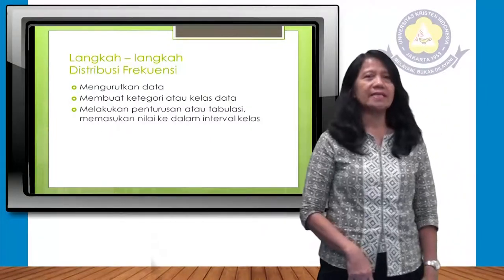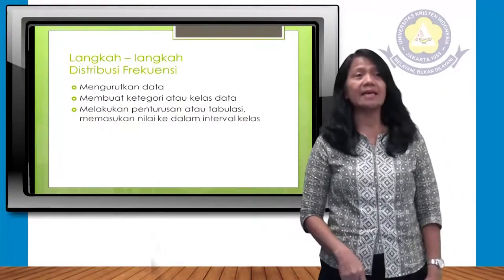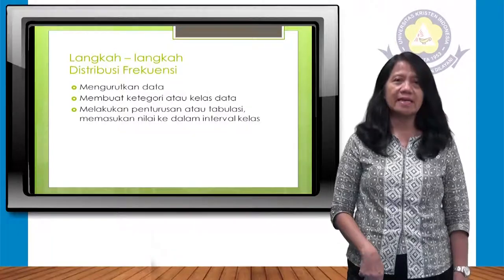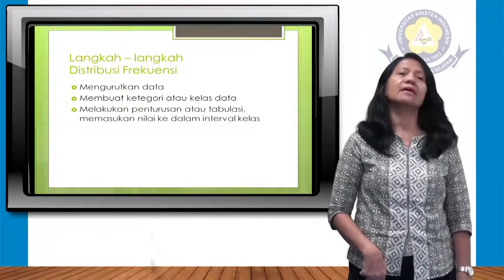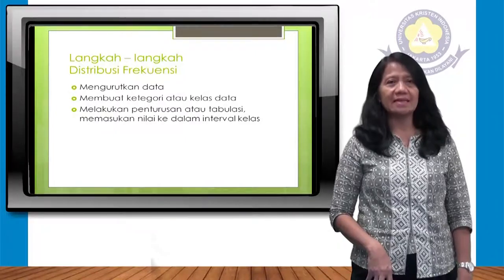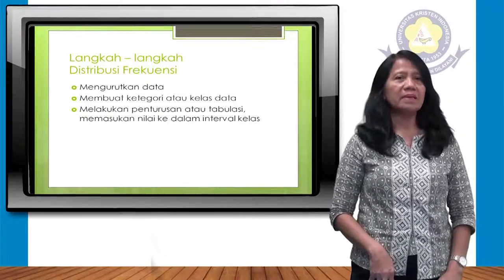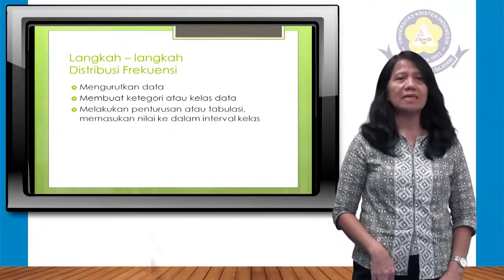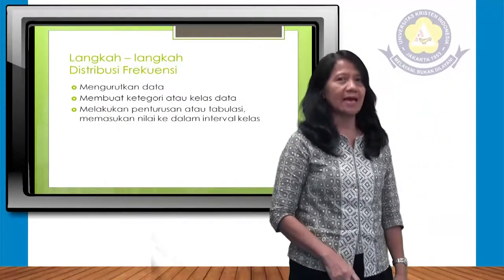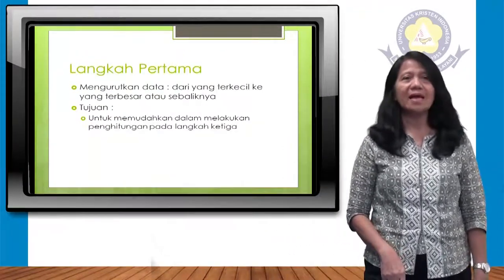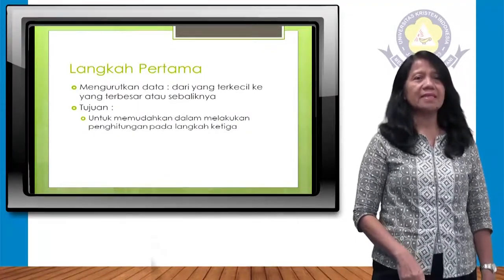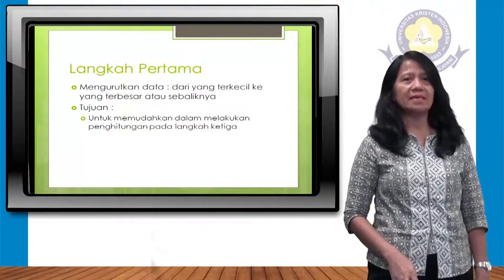Ascending adalah mengurutkan data dari kecil ke besar, sementara descending adalah dari besar ke kecil. Langkah berikutnya: membuat kategori atau kelas data, melakukan penturusan atau tabulasi, dan memasukkan nilai ke dalam interval kelas. Langkah pertama: mengurutkan data dari yang terkecil ke yang terbesar, atau sebaliknya.